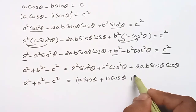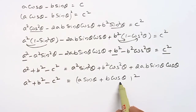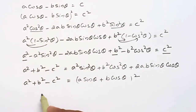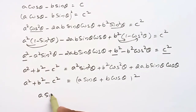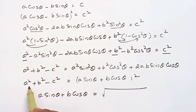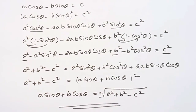Therefore, A sin theta plus B cos theta is equal to plus or minus root of A squared plus B squared minus C squared. Hence proved.